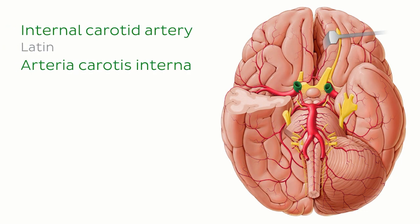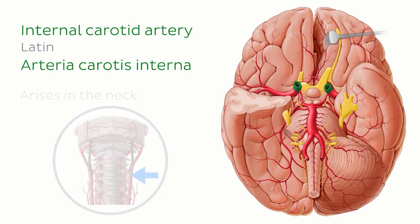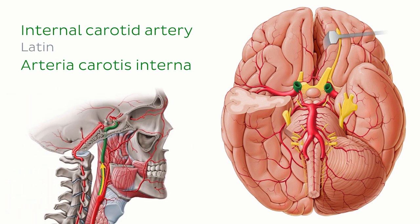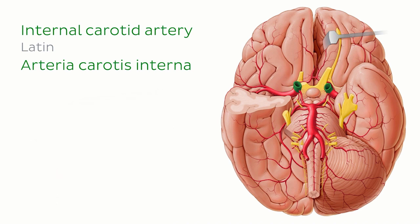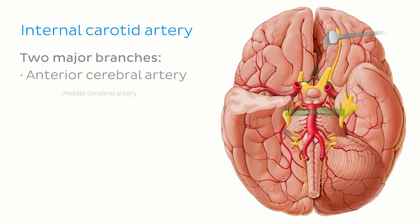Here we can see the internal carotid arteries highlighted in green. The internal carotid artery arises in the neck at the bifurcation of the common carotid artery. It gives off no branches in the neck, enters the skull through the carotid canal, and emerges in the cranial cavity after a tortuous course in the carotid canal. In this illustration, most of the intracranial portion of the internal carotid artery is removed, except for the part which serves as an origin point for the anterior circulation. The internal carotid artery gives off two branches which constitute the anterior circulation: a smaller branch for the brain parenchyma, and an anastomosing branch to communicate with the posterior circulation. The two major branches are the anterior cerebral artery and the middle cerebral artery.